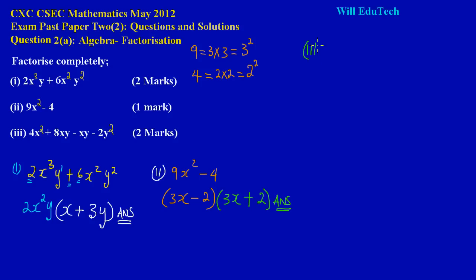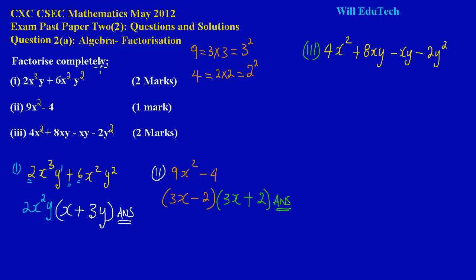In part 3 we have 4x² + 8xy − xy − 2y². This is factorization by grouping — we have a whole playlist on that. When factorizing by grouping, I have four terms. I'm going to group the first two terms: 4x² + 8xy, and then group the last two terms: −xy − 2y². Now I'm going to look for what is common to the first two terms. I look at my numbers: 4 is common, and x is also common.